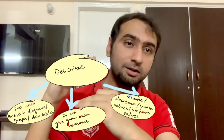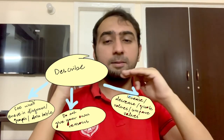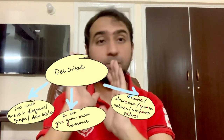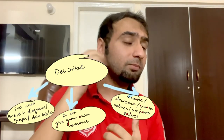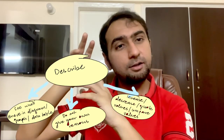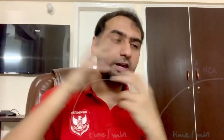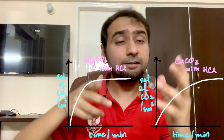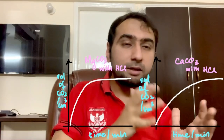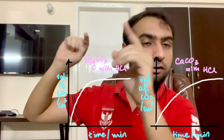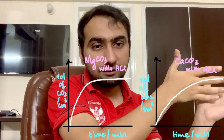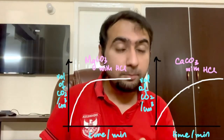The first thing to keep in mind is understanding which keyword the question is using. For example, if the question uses 'describe', you just have to tell me what's happening. If a diagram or graph is given, you tell me what it shows. For example, if hydrochloric acid is reacting with calcium carbonate and magnesium carbonate and a graph is given, you just say the graph was steeper for this compound, less steep for this one, and it becomes horizontal at this time.